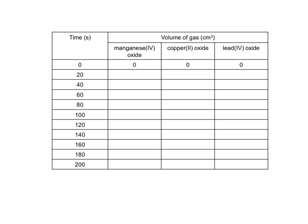In order to perform a fair test, you would use the same volume of the same concentration of hydrogen peroxide and the same mass of the metal catalyst, just changing the identity of the catalyst each time, and then measure the volume of gas produced every 20 seconds, perhaps until the end of the reaction.